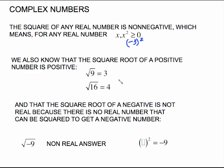Secondly, working the other way, we also know that the square root of a positive number is positive. The square root of 9 is 3, the square root of 16 is 4. We don't say the square root of 9 is negative 3. This symbol right here stands for the positive square root.